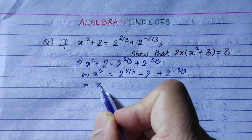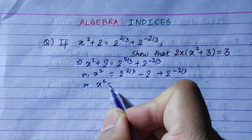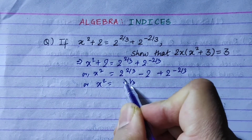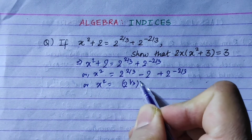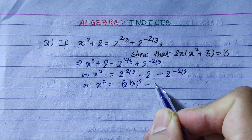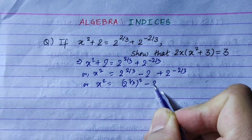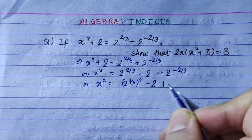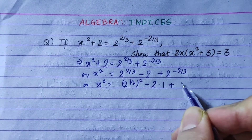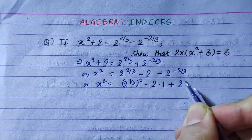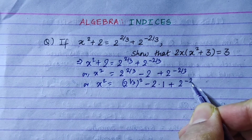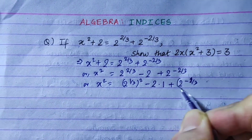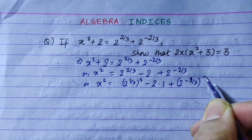Now, 2x squared equals — taking 2 to the power 1/3 plus 2 to the power minus 1/3 whole squared. We expand this using the whole square formula.